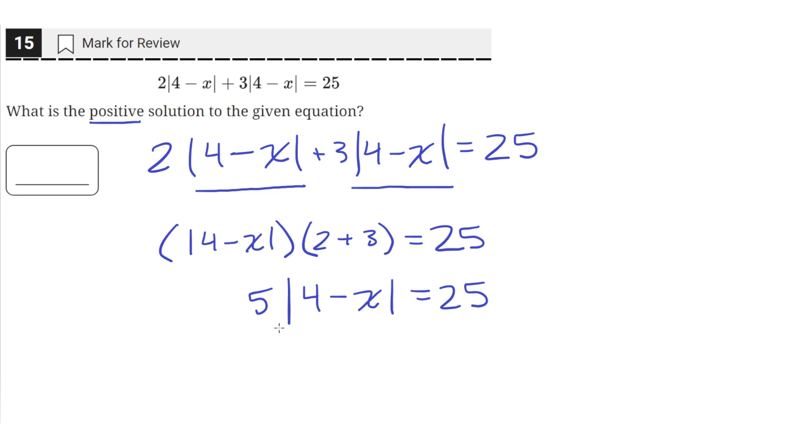Now that we have this, we can start isolating for x. The first thing we want to do is divide both sides by 5. That'll get rid of this 5 here. So 5 over 5 is 1, so it changes nothing. Absolute value of 4 minus x on this side, and then 25 divided by 5 is 5.